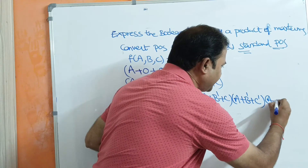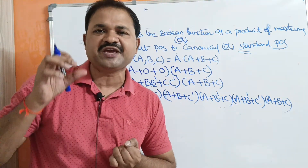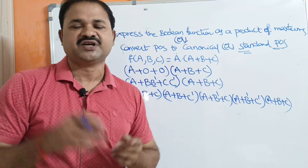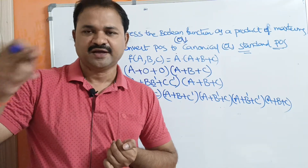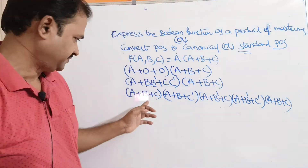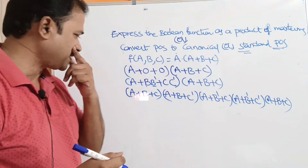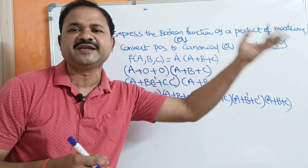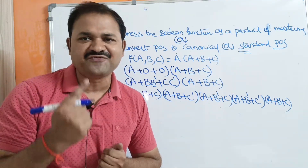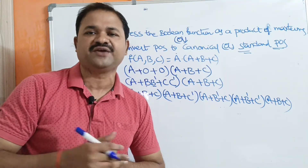So if two literals or variables are missing, we need to write all the combinations: b+c, b+c', b'+c, and b'+c'. Now let us check whether any terms are repeating. If any terms are repeating, then write only once, because we have the formula a + a = a.